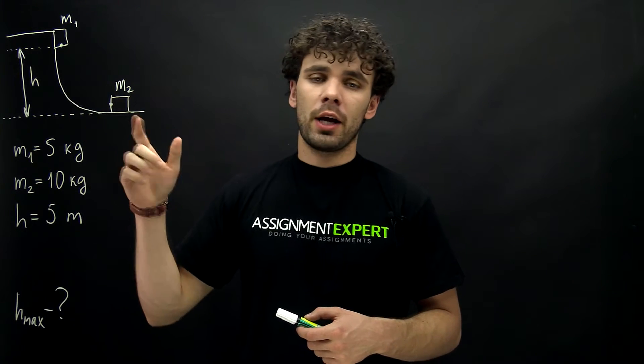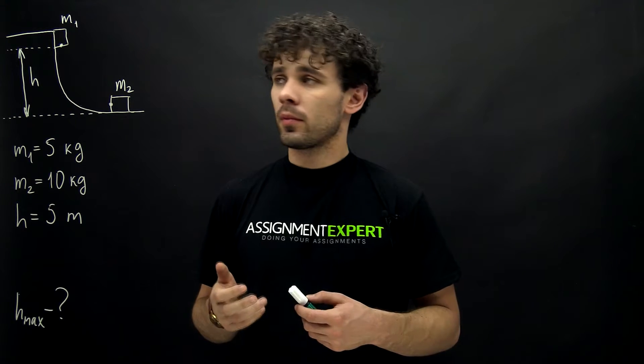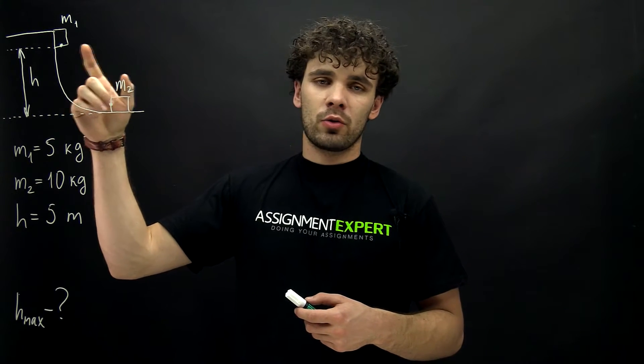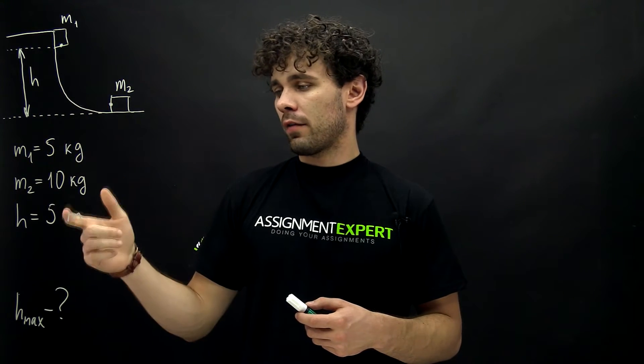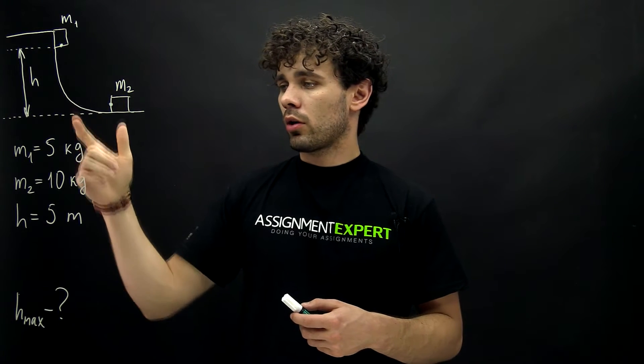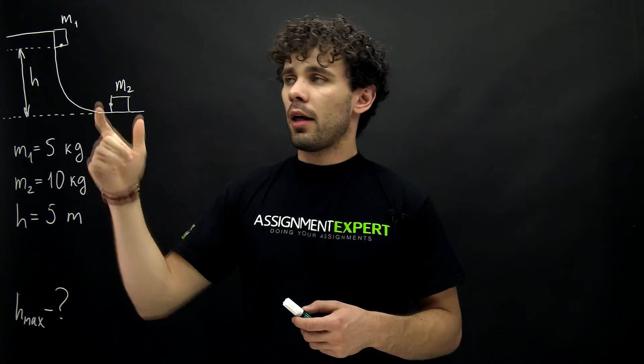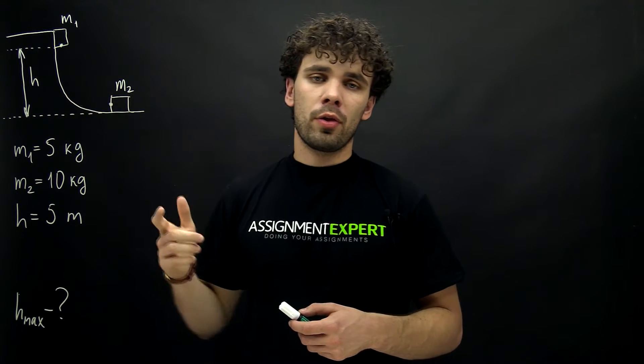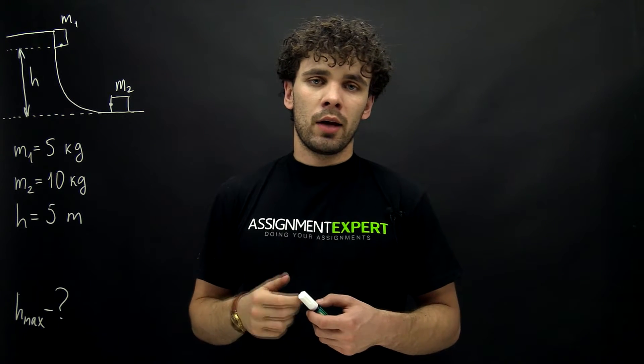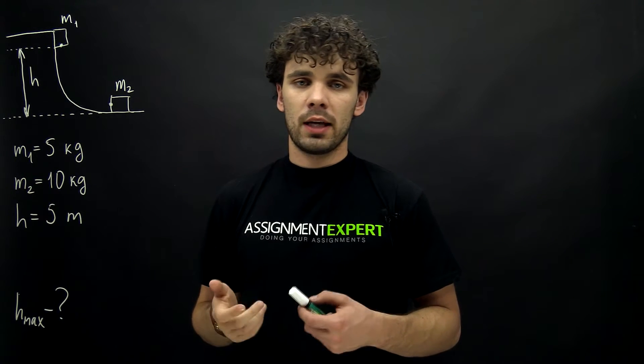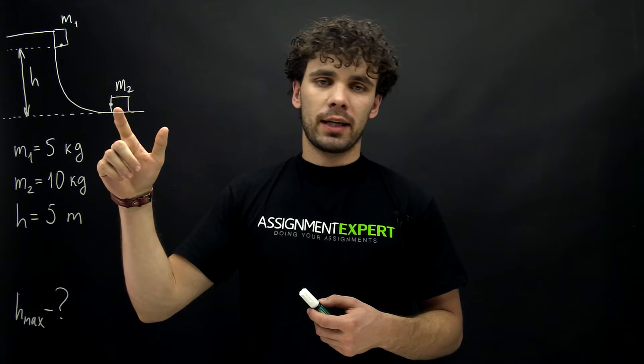Two blocks are sliding on a frictionless track. The first block is released from the height 5 meters and the mass of this block is 5 kilos. At the front of this block there is a north pole of a strong magnet, which repels the north pole of the same magnet which is at the end of the second block.